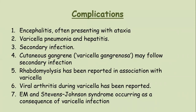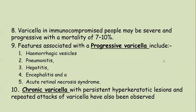Complications: chickenpox is complicated by encephalitis often presenting with ataxia, varicella pneumonia and hepatitis — both life-threatening. Secondary infection can occur; cutaneous gangrene, called varicella gangrenosa, may follow secondary infection. Rhabdomyolysis and viral arthritis are also described. Erythema multiforme and Stevens-Johnson syndrome can occur as a consequence of varicella infection. In immunocompromised patients, varicella may be severe and progressive with mortality of 7 to 10%; features of progressive varicella include hemorrhagic vesicles, pneumonitis, hepatitis and acute retinal necrosis syndrome. Chronic varicella with persistent hyperkeratotic lesions and repeated attacks has also been observed.